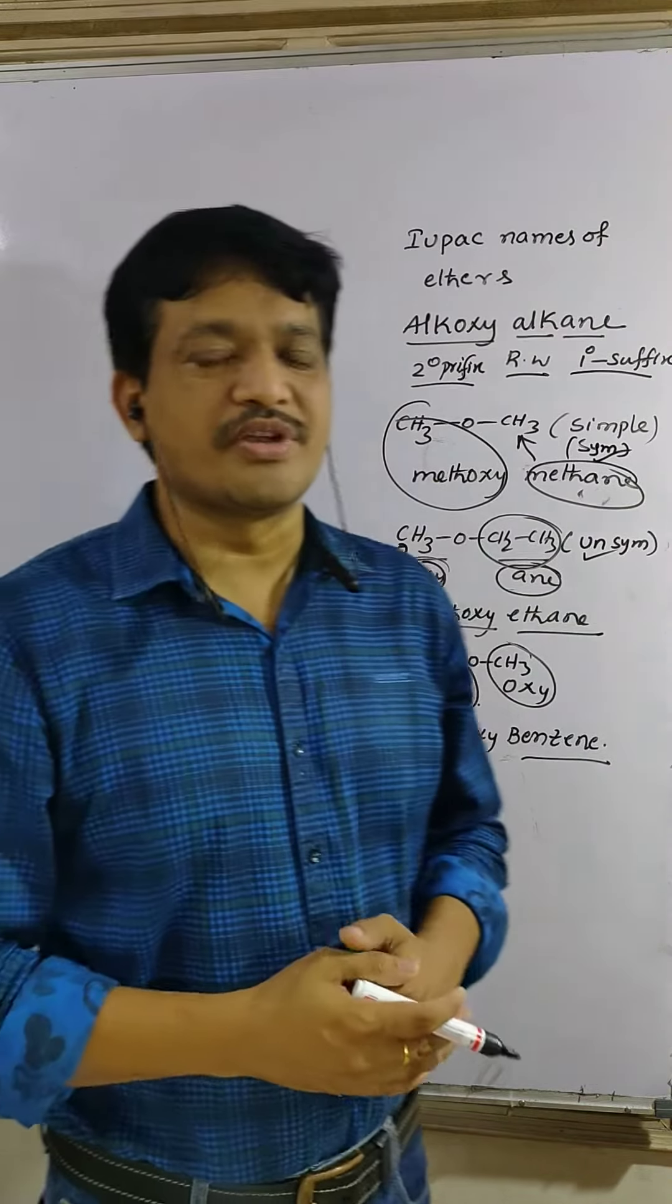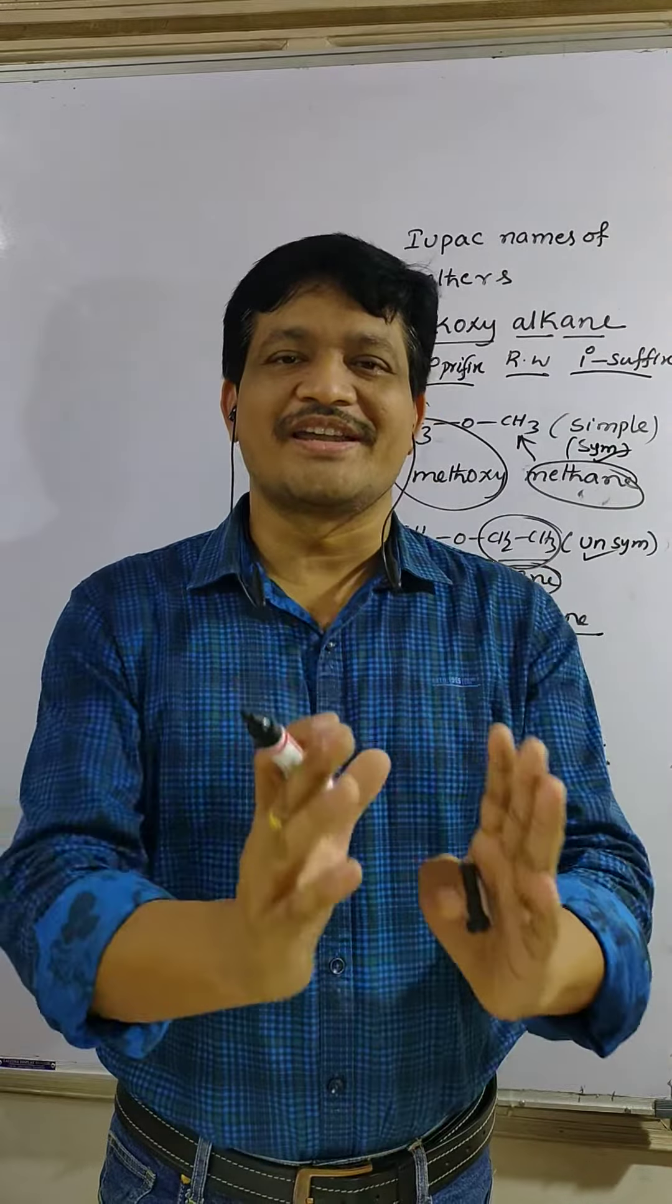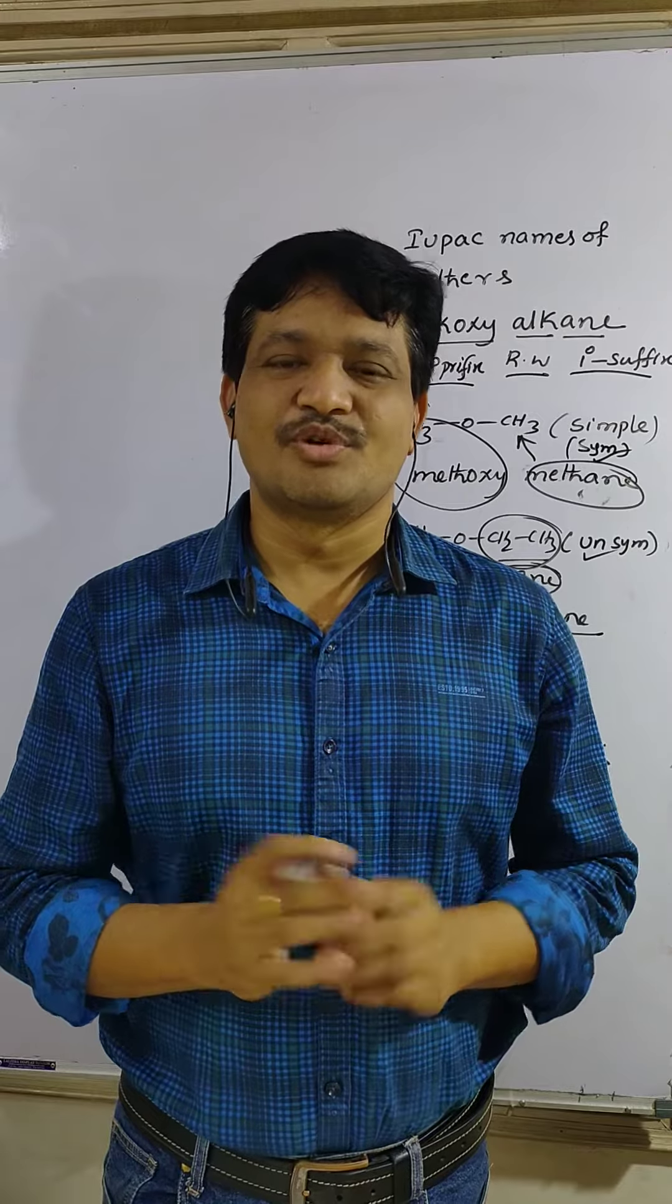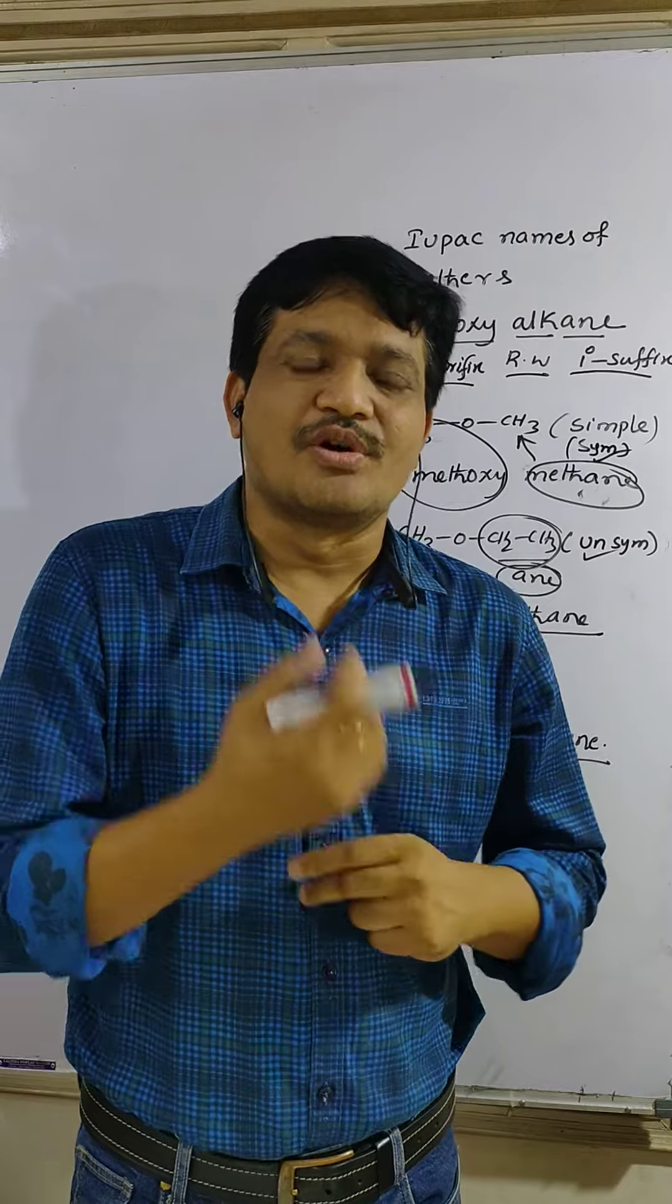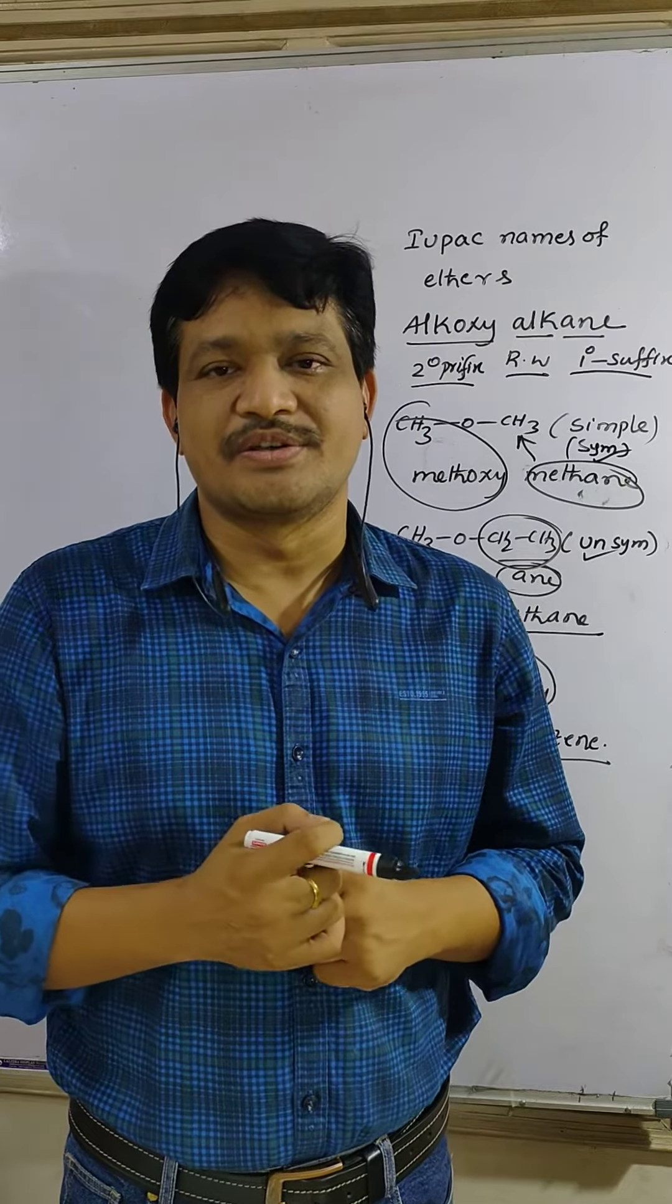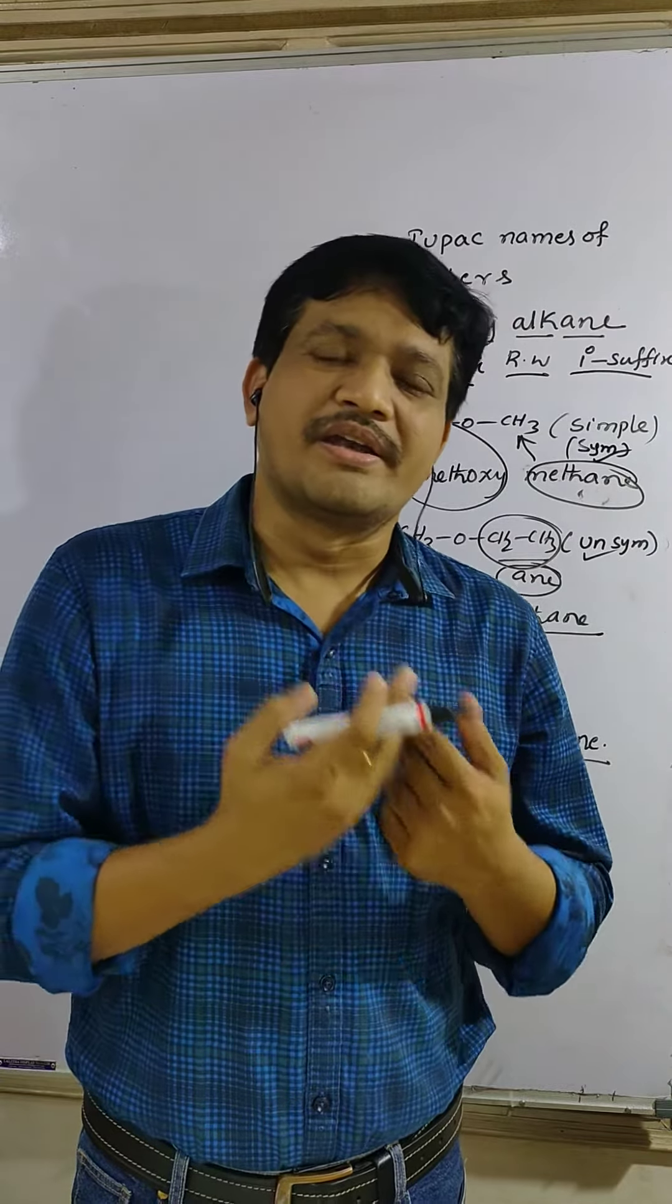What is the IUPAC name to it? Alkoxyalkane. Both sides equal, don't worry. And unequal, oxy is added to lower carbons, -ane is added to higher carbons.